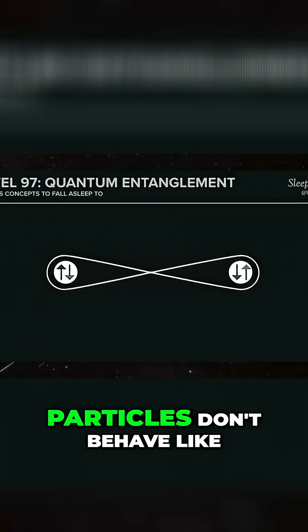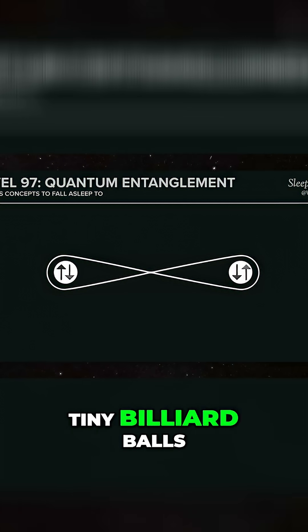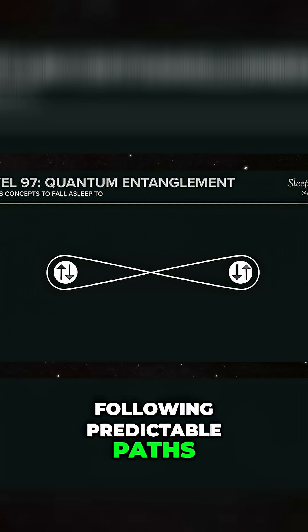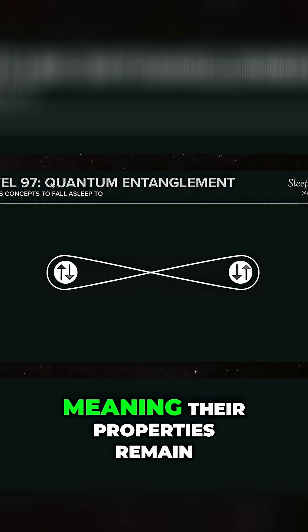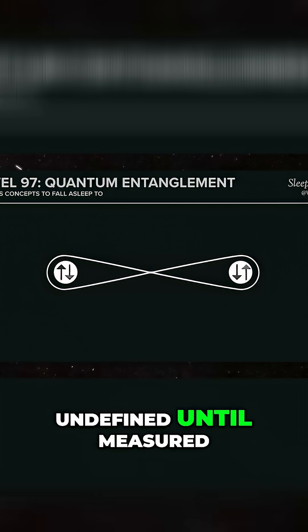At the quantum level, particles don't behave like tiny billiard balls following predictable paths. Instead, they exist in a superposition of states, meaning their properties remain undefined until measured.